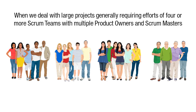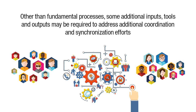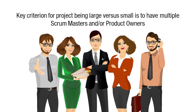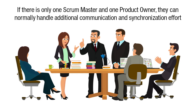When we deal with large projects, generally requiring the efforts of four or more Scrum teams with multiple product owners and Scrum masters, other than the fundamental processes, some additional inputs, tools, and outputs may be required to address the additional coordination and synchronization efforts. The definition of a large project may depend on the company and the complexity of projects undertaken. The key criterion for a project being large versus small is to have multiple Scrum masters and/or product owners. If there is only one Scrum master and one product owner, they can normally handle the additional communication and synchronization effort.